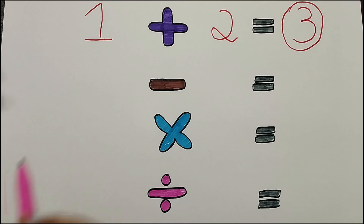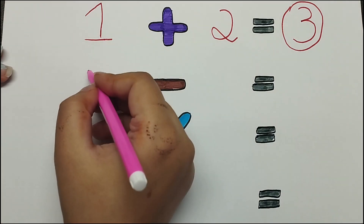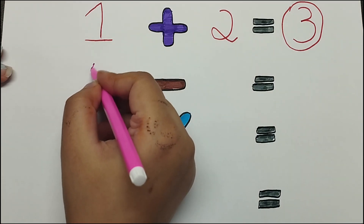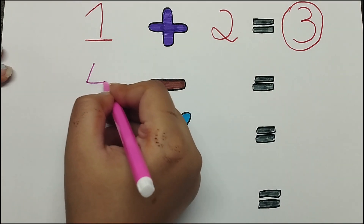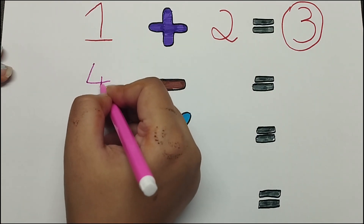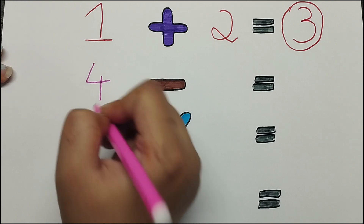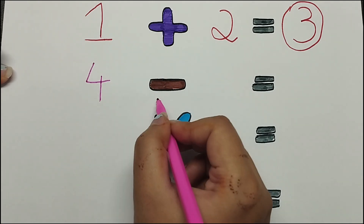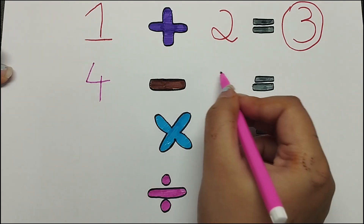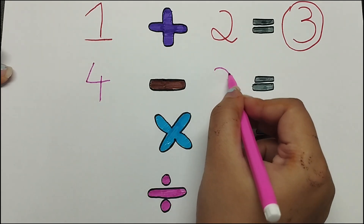Let's perform subtraction now. 4 minus 2 is equals to 2.